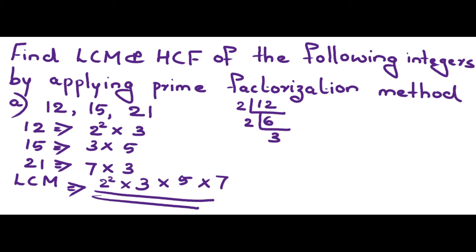HCF means highest common factor — it is the product of the smallest powers of common prime factors involved in the numbers. The only common factor across 12, 15, and 21 is 3. So HCF = 3. Remember: for LCM take the greatest power from all integers; for HCF take only the common factor.